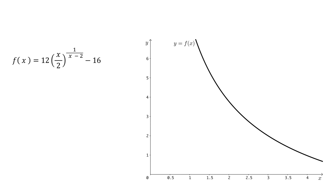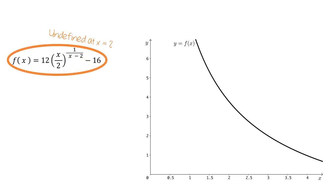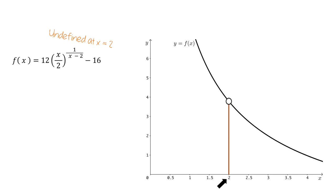If you look closely at the formula, you notice that the exponent has a fraction that is undefined at x equals 2. This causes the entire function to be undefined at x equals 2. So let's look at the graph carefully at x equals 2. Since f is undefined at x equals 2, the graph of f has a hole when x equals 2.